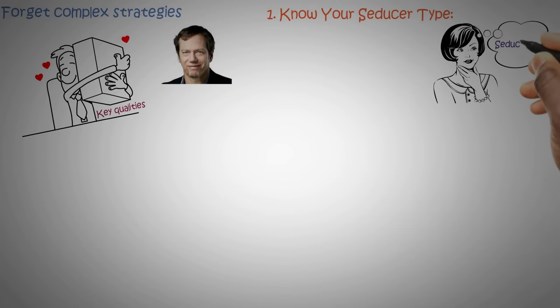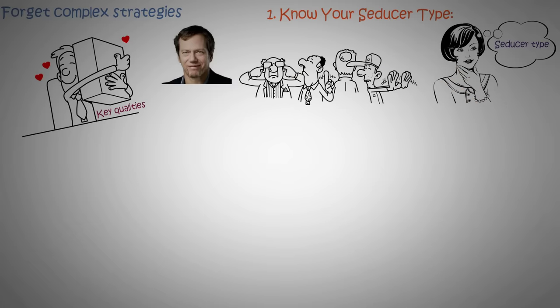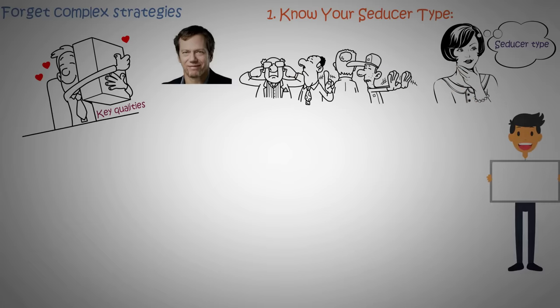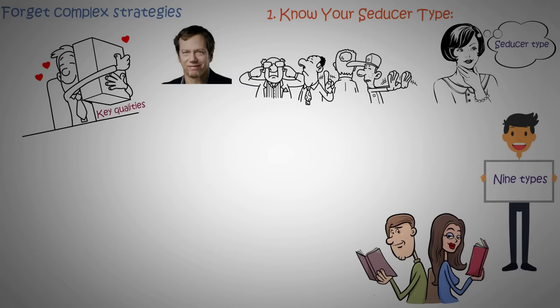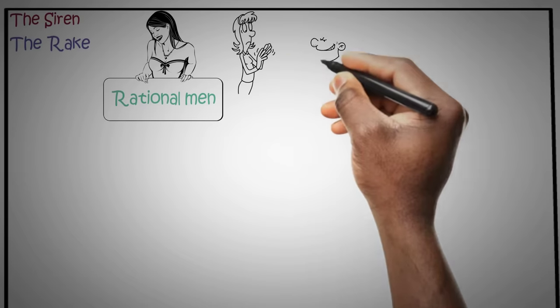Figure out your natural seducer type and work on it. Maybe even blend in a bit of other types. Also, watch out for things that turn people off. We'll get to that. Greene has categorized them into nine types. Some are gender-specific, others apply to all. Each has its own seductive quality. The Siren: the ultimate seductive woman who lures in rational men. The Rake: the bad boy who showers women with excitement.